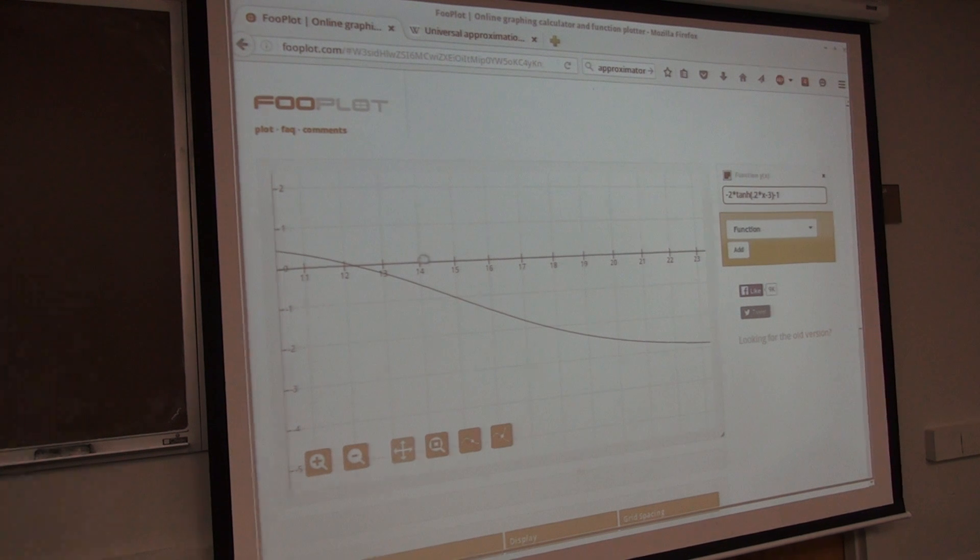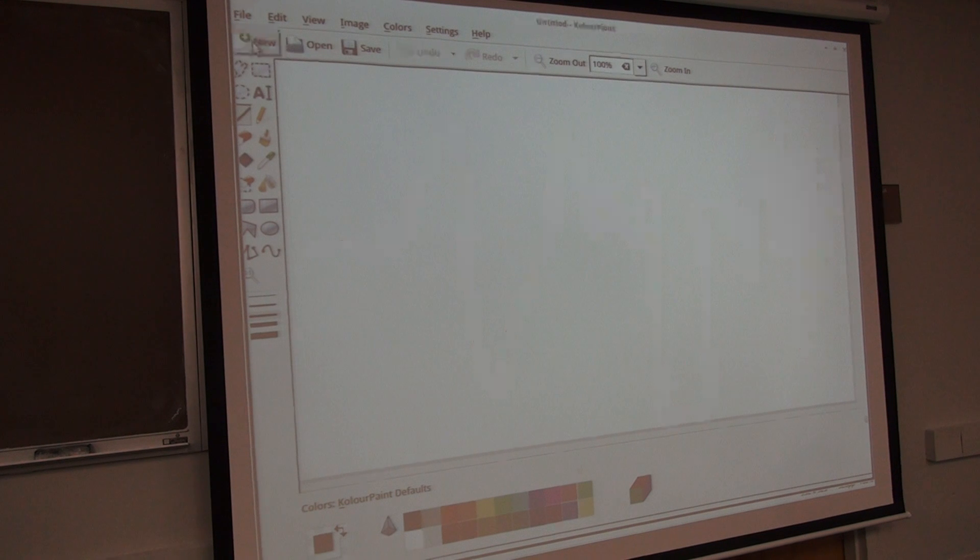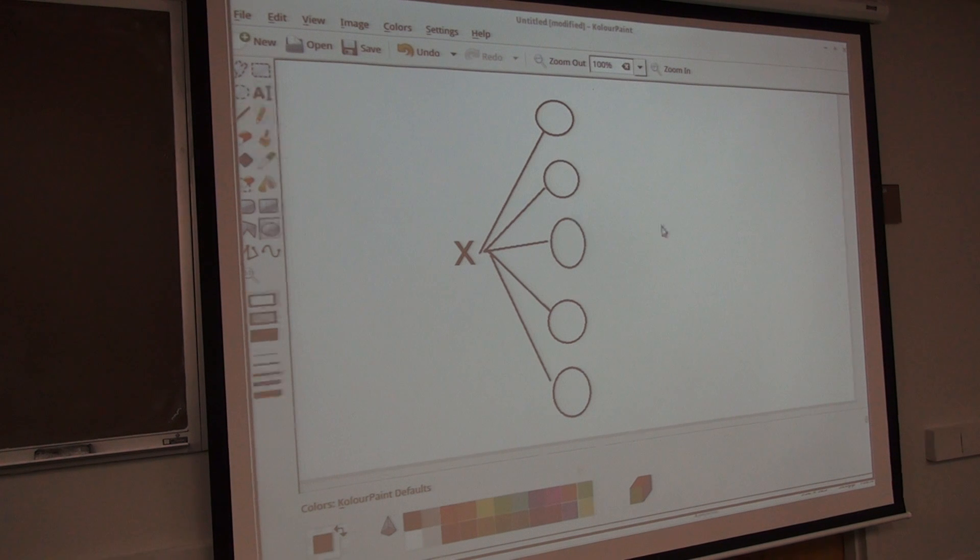So now I'm going to draw a neural network topology. I will call this value x. That's a z. And x will feed into some arbitrary number of units. These are what are called hidden units. A hidden unit is any unit that's not on the input end or on the output end.